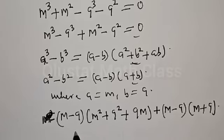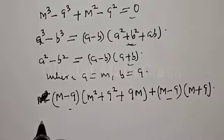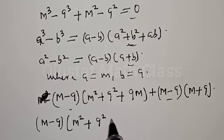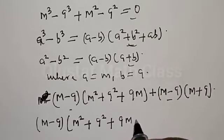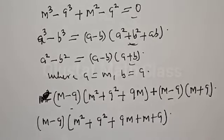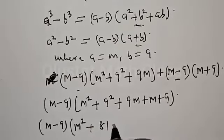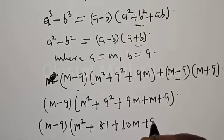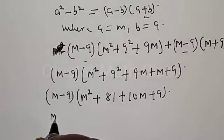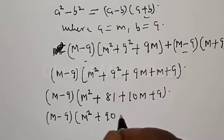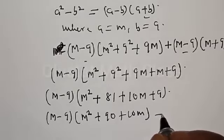Now, M minus 9 is common in both terms. Let's factor it out. We have M minus 9, open bracket, M² plus 81 plus 9M plus M plus 9. Then M² plus 81 plus 9M plus M plus 9 simplifies to M² plus 10M plus 90. So we have M minus 9 multiplied by M² plus 10M plus 90, everything equal to 0.